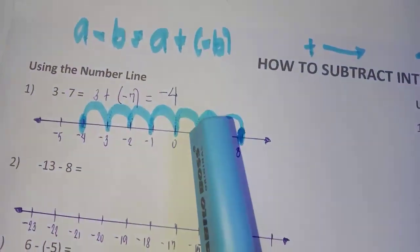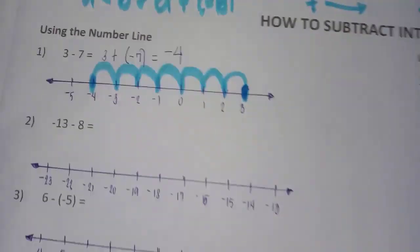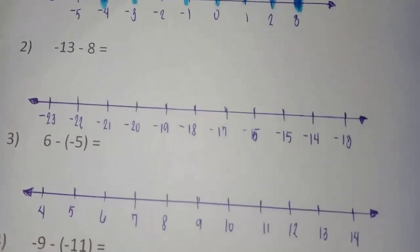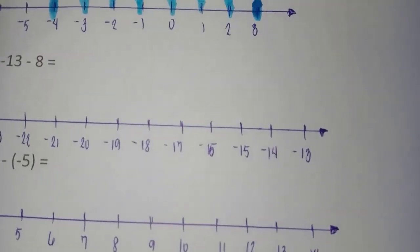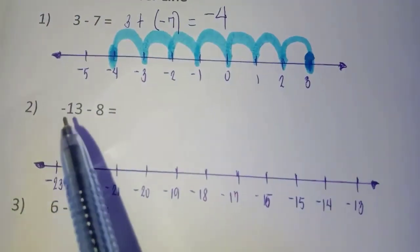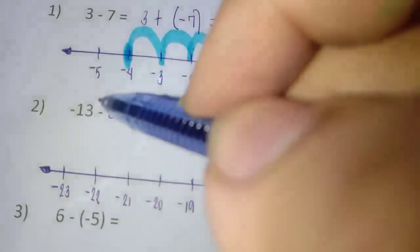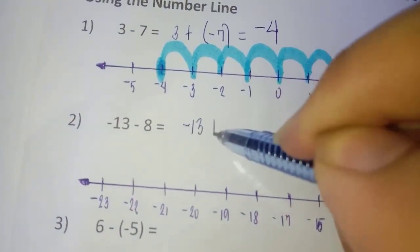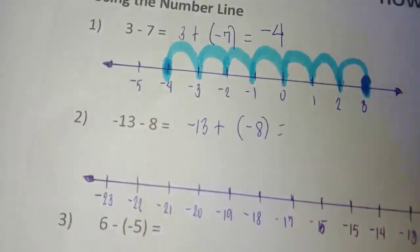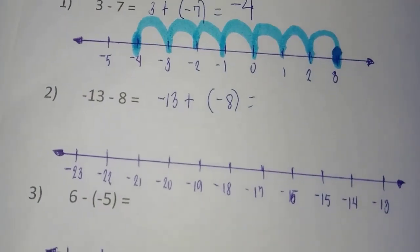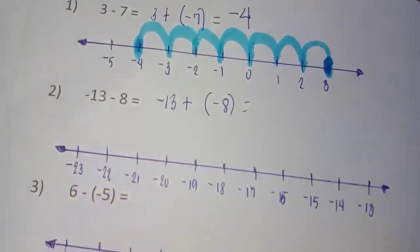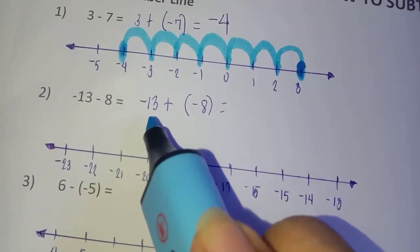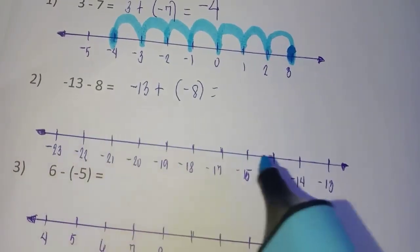Therefore, three minus seven equals three plus negative seven, which is negative four. Example 2: negative 13 minus eight. We rewrite it as negative 13 plus negative eight. We can now proceed to the number line.